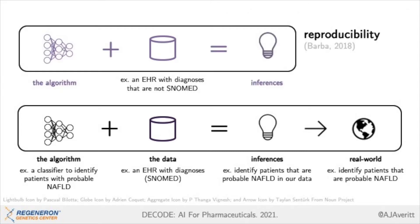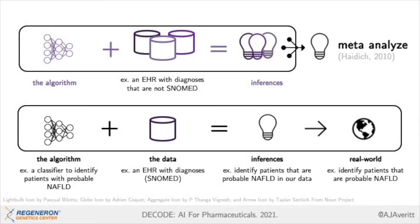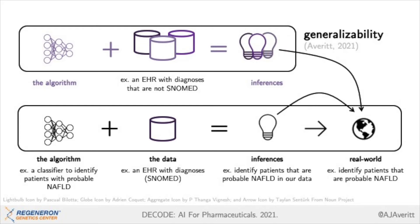Of note, we can apply the algorithm to the new data and make new inferences to compare to the original model in exercises of reproducibility. We could take the exact models in our original pipeline, apply them to new data, and assess transportability. We could apply the algorithm to many new data sources, compare the inferences, and assess replicability. We could maybe take all of these different inferences and meta-analyze them. Or we can compare inferences from data sources to some theoretical gold standard, which would help us understand generalizability. All of these many important questions are only addressed in the presence of additional datasets.